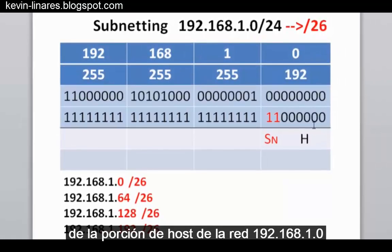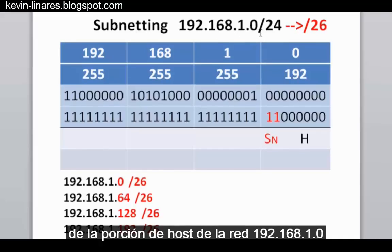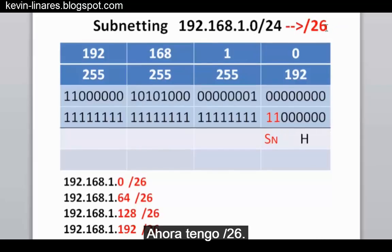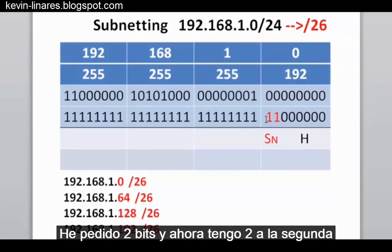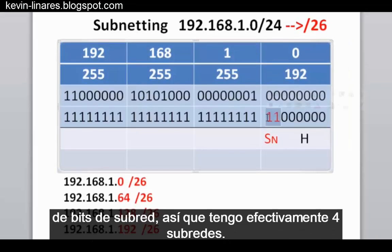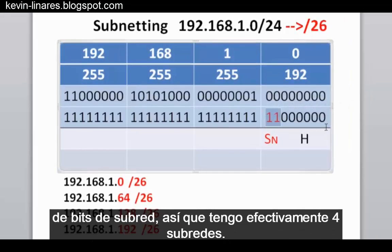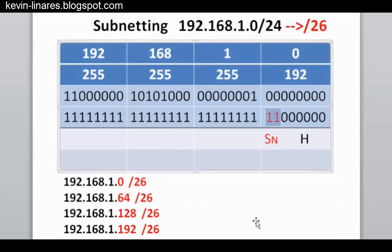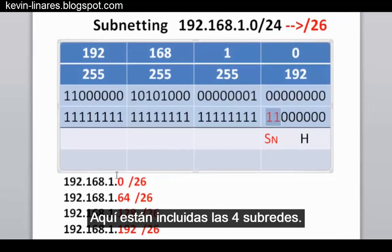If we borrow two subnetwork bits from the host portion of the original 192.168.1.0 slash 24 network, we now have slash 26. Borrowing two bits means two to the second power of subnet bits, giving us effectively four subnetworks.